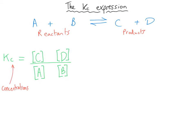Things get slightly complicated if we have coefficients in the equation — a multiplier, or a certain number of moles of a chemical. The number of times something appears in the chemical equation, we need to raise it to that power in the Kc expression. So if A appears X times, we raise it to the power of X; if B appears Y times, we raise it to Y; if C appears Z times, we raise it to Z; and if D appears W times, we raise it to W.